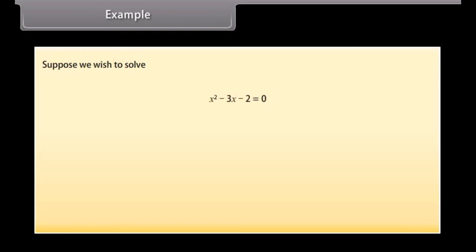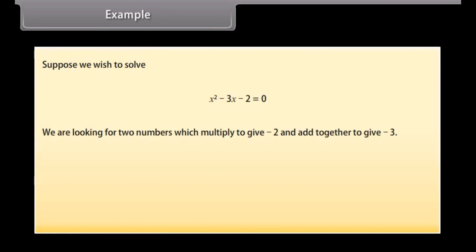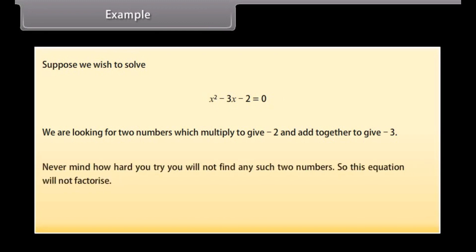Example: Suppose we wish to solve x² − 3x − 2 = 0. We are looking for two numbers which multiply to give −2 and add together to give −3. No matter how hard you try, you will not find any such two numbers, so this equation will not factorize. For this we need another approach, which we will learn in the next screen.